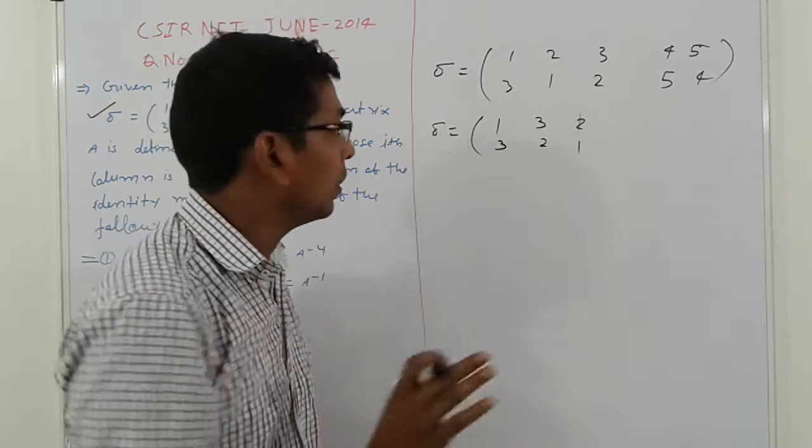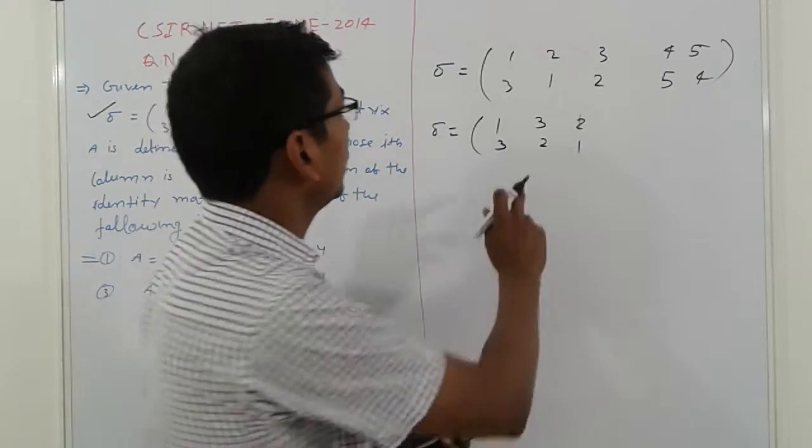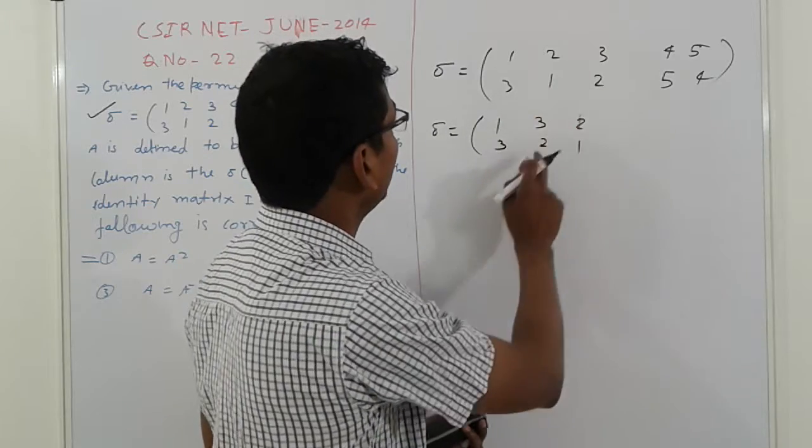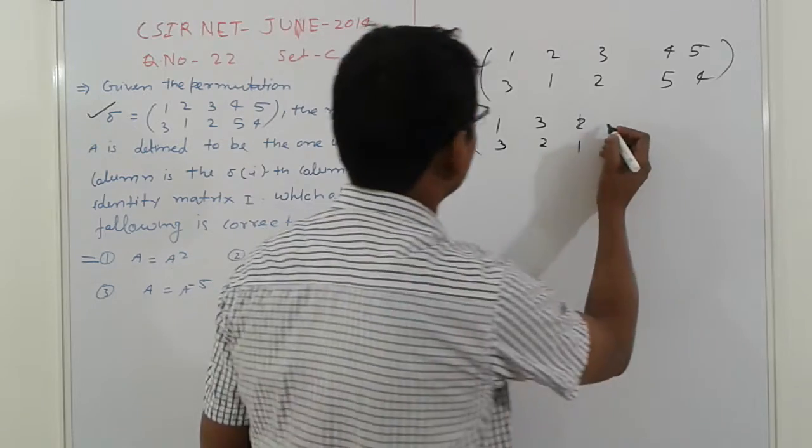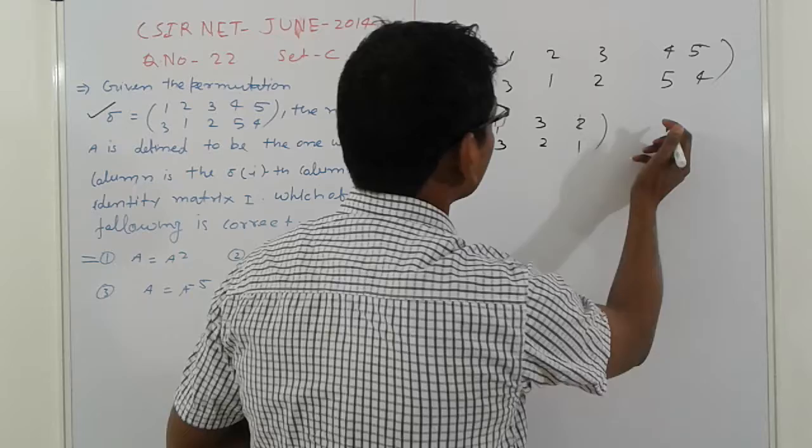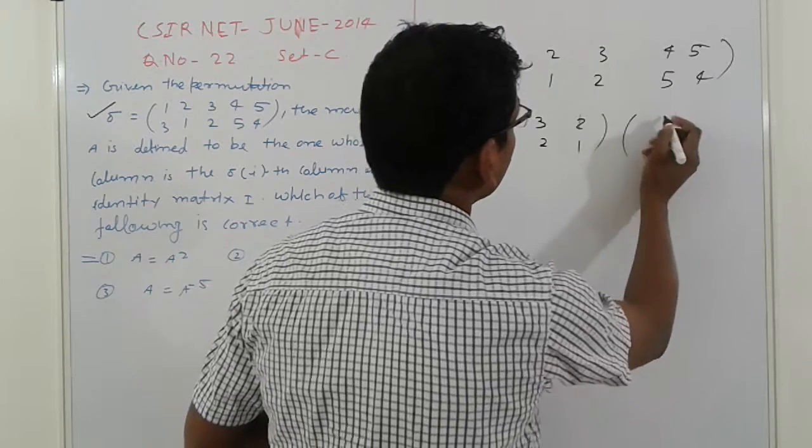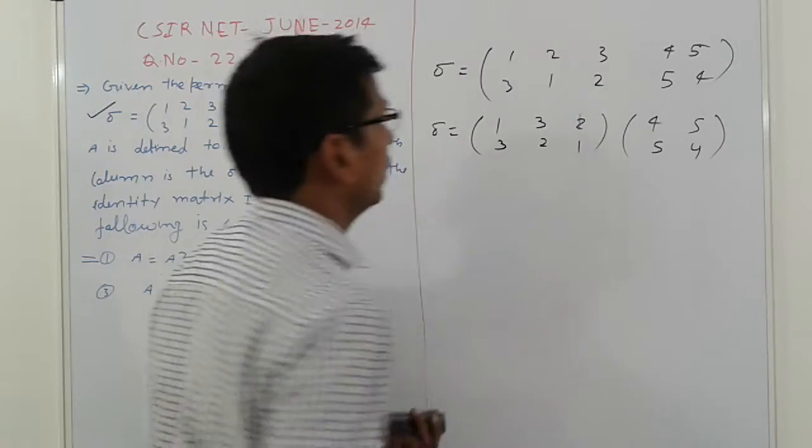3, 2, 3, 1, 2. That is, here arrangements. No problem. And here, that is next. Here this is another bracket. This is 4, 5, and 5, 4. Okay.